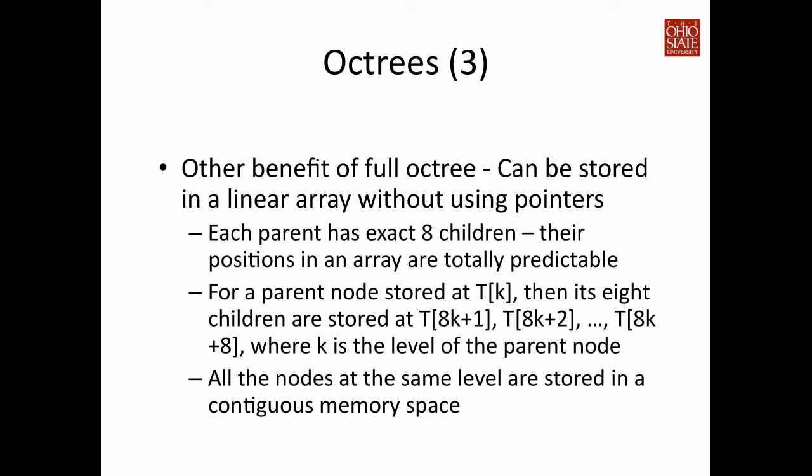Having a full OctTree provides an important advantage: you can store the tree in a linear array and index any node without using pointers. Assuming you store the tree in level-order traversal — where all nodes at the same level are stored in contiguous memory — and since every node has exactly eight children, if a parent node is stored at array index k, its eight children are located at indices 8k+1 through 8k+8. So with a full OctTree, you can store all tree nodes in a 1D array and easily identify each node's location without any pointers.